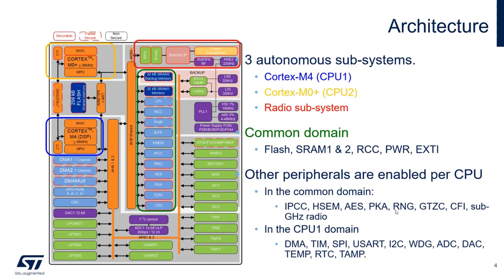This is the architecture of the dual-core. We have three systems: CPU1, CPU2, and the radio subsystem. There is a common domain relevant to all the cores. In the common domain, we have flash, SRAM1 and 2, reset and clock controller, power peripheral, and external interrupts peripheral. If any core is working — M4 or M0 — those peripherals are always clocked. There are also other peripherals in the common domain enabled per CPU.